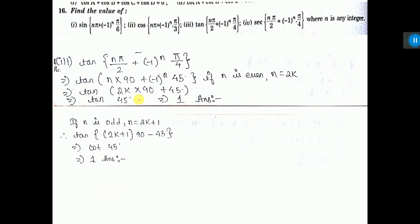We have got up to this, 2k into 90 plus 45. Now here you see, if we put k equal to 0, then what is coming? This portion total is 0, it is coming only 45, the value is 1. This is not the answer.